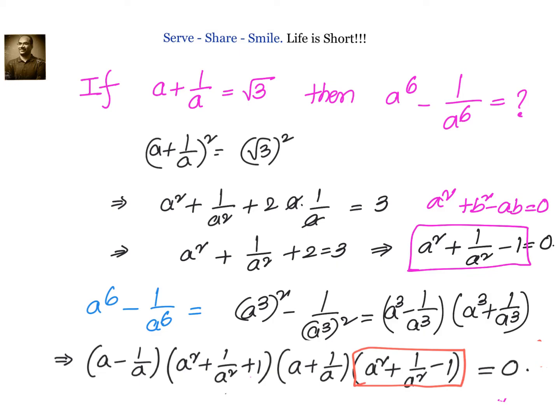Let us have a recap. We were given that a + 1/a = √3, and we had to find a⁶ - 1/a⁶. Squaring both sides gives a² + 1/a² + 2 = 3, or a² + 1/a² - 1 = 0, which is of the form a² + b² - ab = 0. Now factorizing what we need to find, we apply the a² - b² formula: (a³ - 1/a³)(a³ + 1/a³).